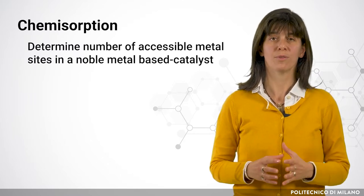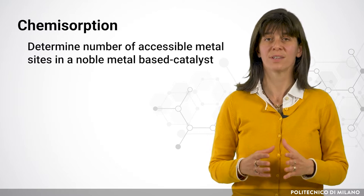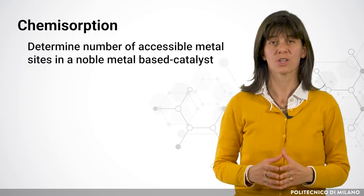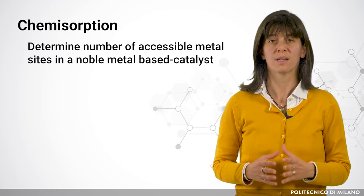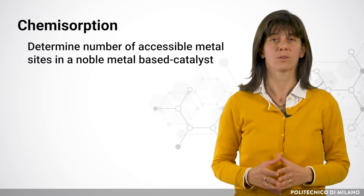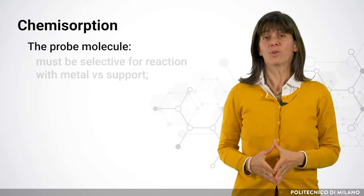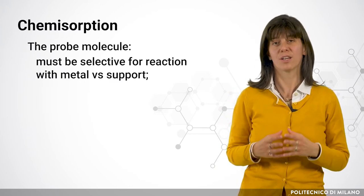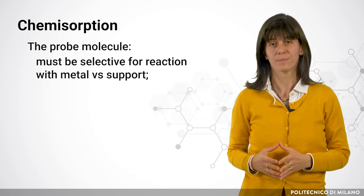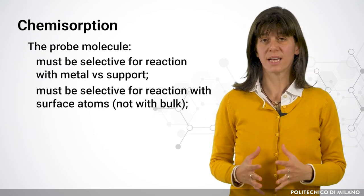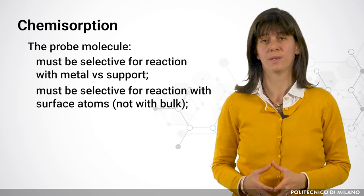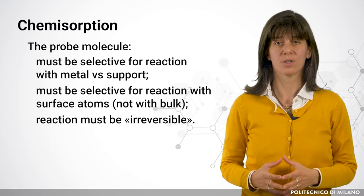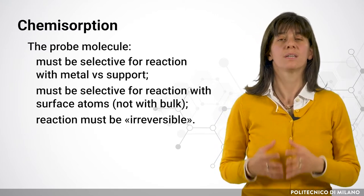We count the number of molecules that have reacted and, knowing the stoichiometry of the reaction, we can obtain the number of metal surface atoms. The probe molecule must be selective for reaction with the metal and not with the support, must be selective for reaction with surface atoms and not with the bulk, and this reaction must be irreversible.